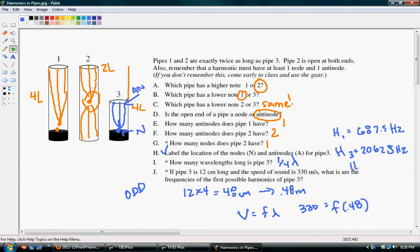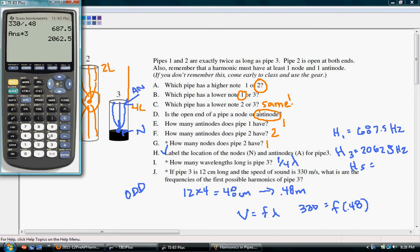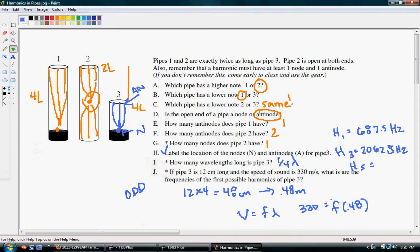And then the next possible harmonic will be harmonic 5. So 687.5 times 5, which is 3437.5 hertz.